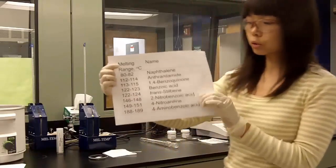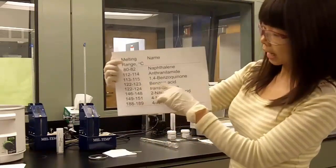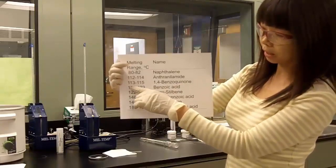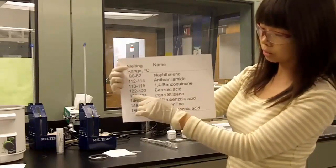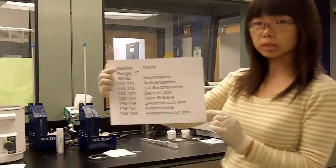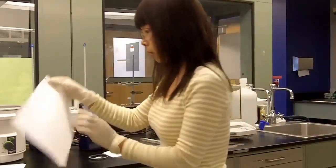So our sample could be benzoic acid, which has melting point at 122 to 123 degrees, or trans-stilbene, 122 to 124 degrees. So how do you know which one is your sample? At this point, you're going to take your unknown sample and then mix them with the two authentic samples.